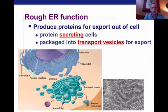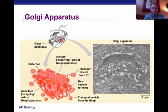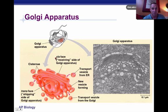The rough ER is involved in the production and export of proteins in the cell — it packages those proteins and also exports them throughout the cell. Now, the Golgi apparatus is kind of like the shipping center. It takes in these packaged proteins, shifts them around or changes them in some way, and exports them again. The Golgi apparatus has two faces: it has a cis face, which is the receiving face, and the trans face, which is the transporting face.